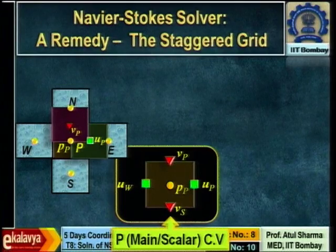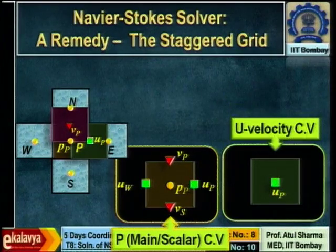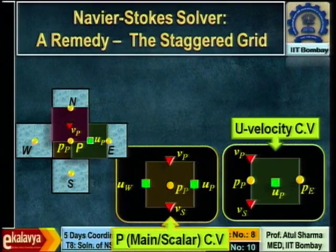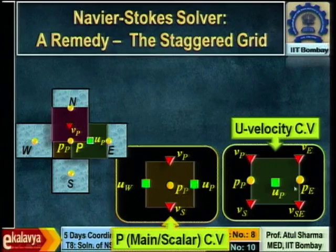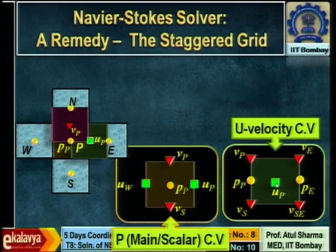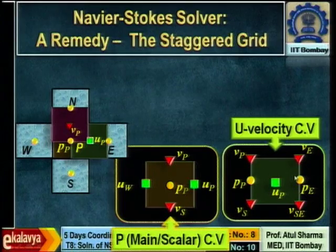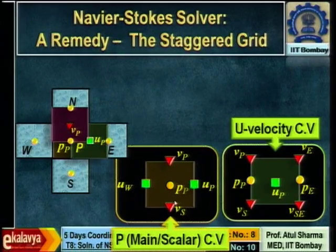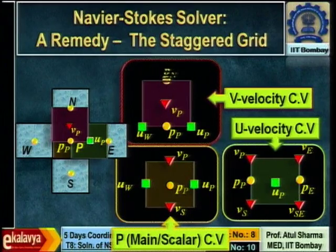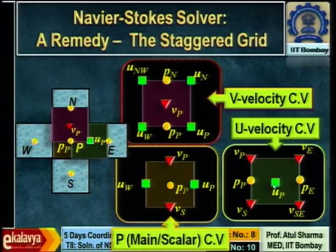We avoid two interpolations with staggering: interpolation of normal velocity at face centers, and interpolation of pressure at face centers. For the u control volume, pressure grid points lie at the face centers, so when applying the x-momentum equation you need pressure at the face center — and you have it directly. Similarly for y-momentum. At the corners of the u control volume you get v velocity, and at the corners of the v control volume you get u velocity.